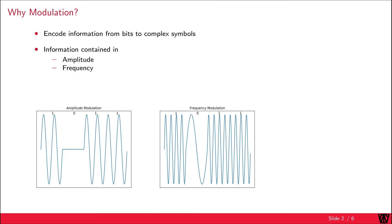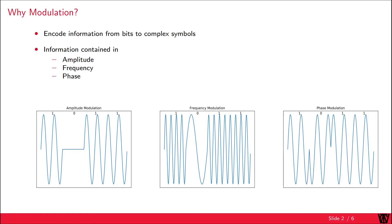Alternatively, we could encode the information in the carrier frequency, where the faster or higher frequency represents a 1 and the lower frequency a 0. Or we include the information in the phase of a signal, where a non-phase-shifted signal is a 1 and a phase-shifted signal is a 0.